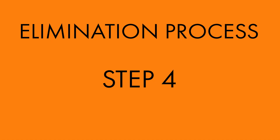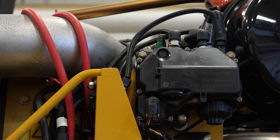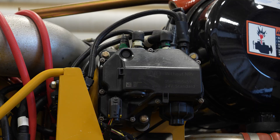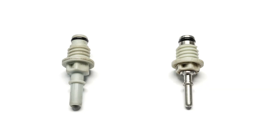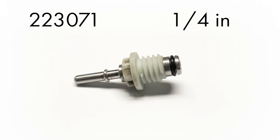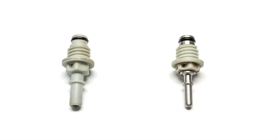Step 4: There are two types of DEF supply modules, easily identified by the white backflow fitting. Backflow fitting part number 218340 has a 3/8 inch inlet, and backflow fitting part number 223071 has a 1/4 inch inlet. The type of inlet fitting will determine the diameter of clear hosing you will need to test it.